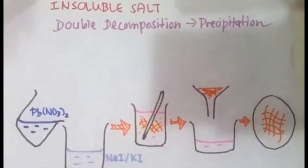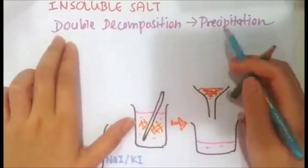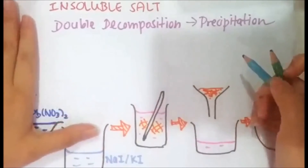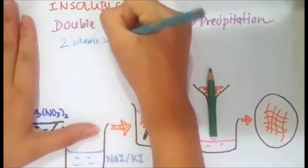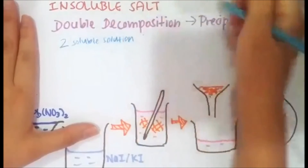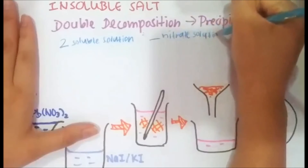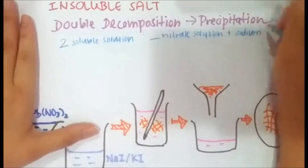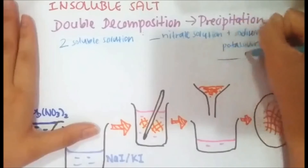Now let's talk about how to prepare insoluble salts. To prepare an insoluble salt, you use double decomposition through precipitation. This means you need two soluble solutions — one containing the nitrate salt and one containing a sodium or potassium solution.